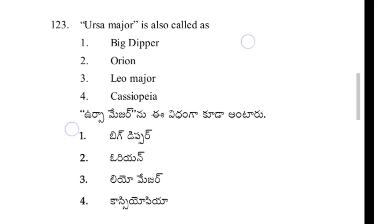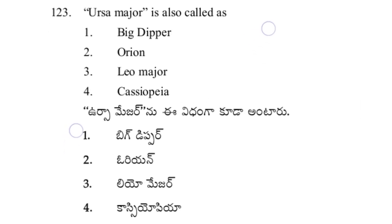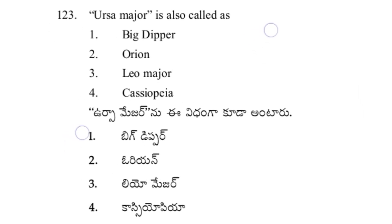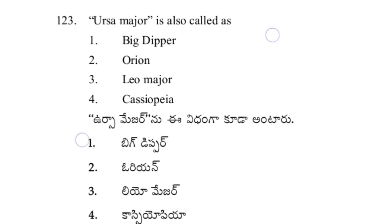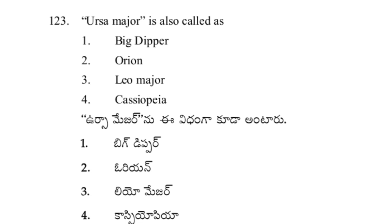Ursa Major is also called the Big Dipper — option 1, answer.